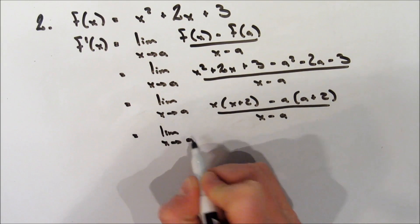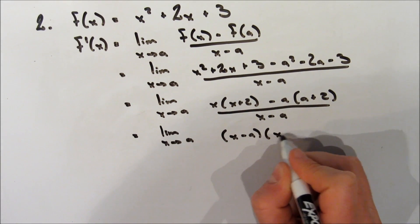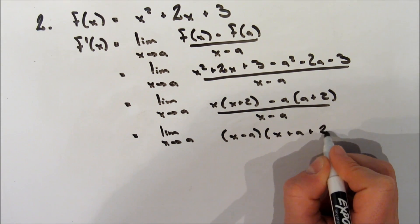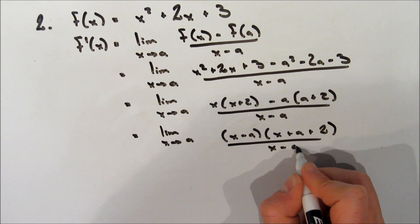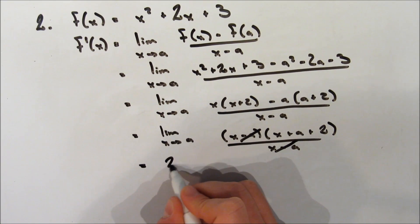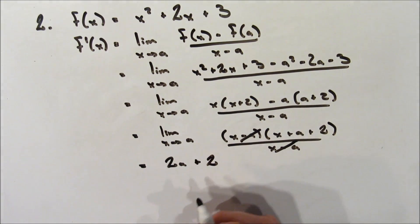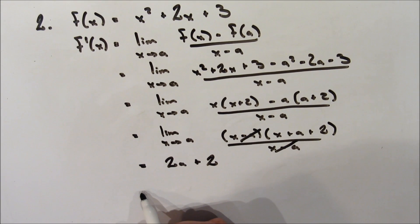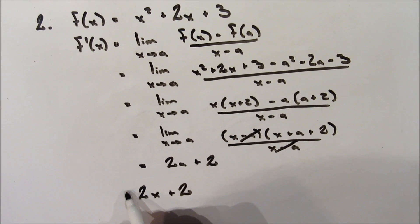Now we can factor this even further. It's the limit as x approaches a, and we're going to say (x minus a) times (x plus a plus 2) all over x minus a. So we can cancel out the x minus a terms. Now we're left with the limit as x approaches a. We're going to sub in a everywhere there's an x to get 2a plus 2.